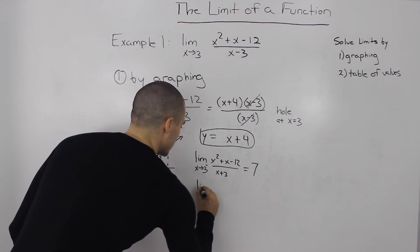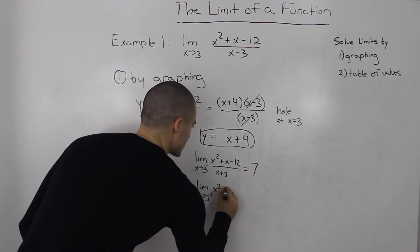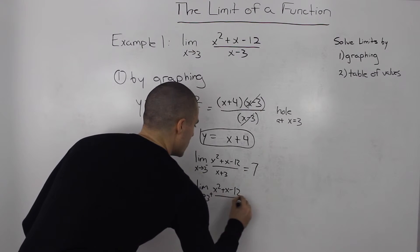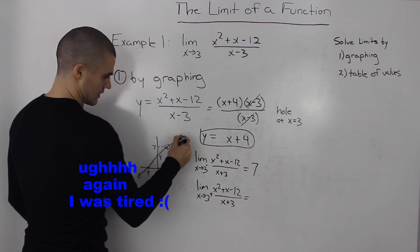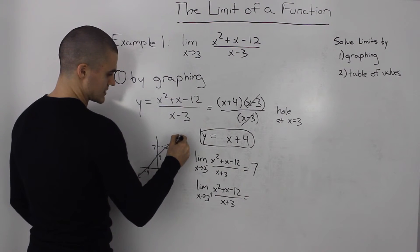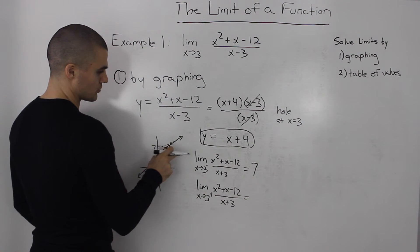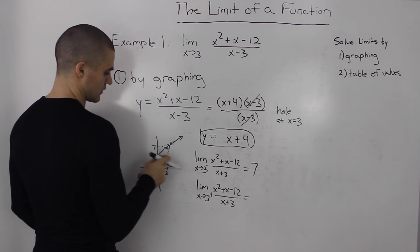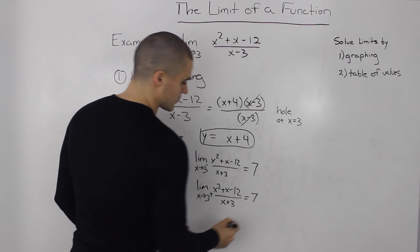And then the limit as x approaches three from the right side of x squared plus x minus twelve over x minus three. As we approach three from the right side, what does the y-value approach on the graph? It equals seven.